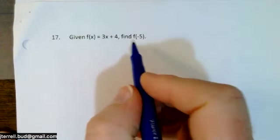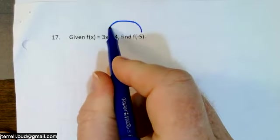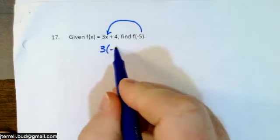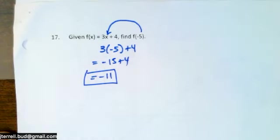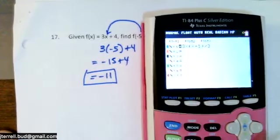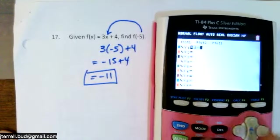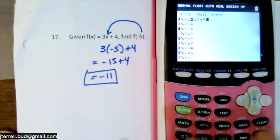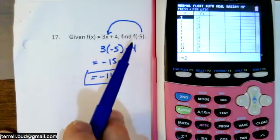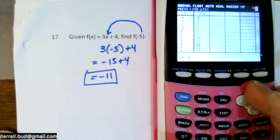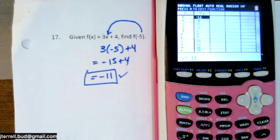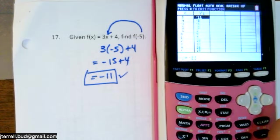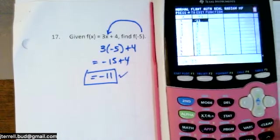Number seventeen: substitute negative 5 in for x, so it's 3 times negative 5 plus 4, which is negative 15 plus 4, equaling negative 11. To verify in your calculator, go to y-equals, enter 3x plus 4, go to the second-Table, and look up x equals negative 5 — you get negative 11, confirming the answer. That's the video — if you have questions, come see me Monday morning or between classes, and Tuesday morning before school or during lunch. Good luck!